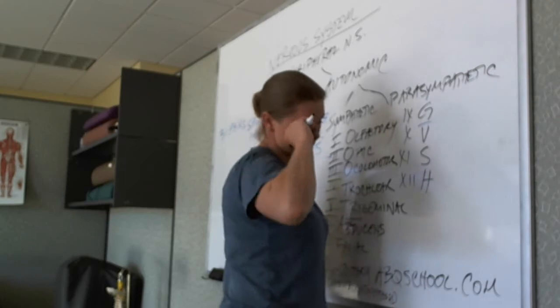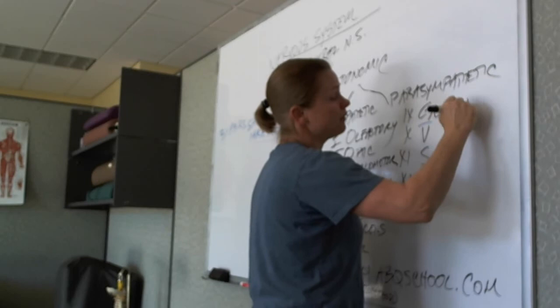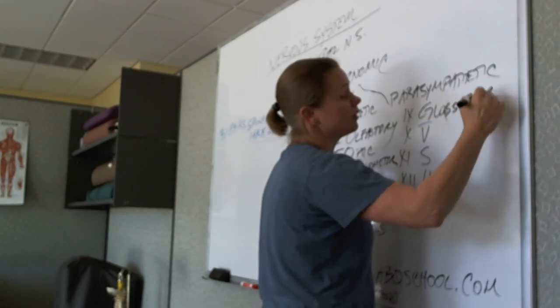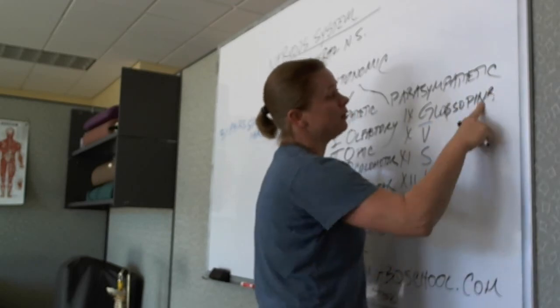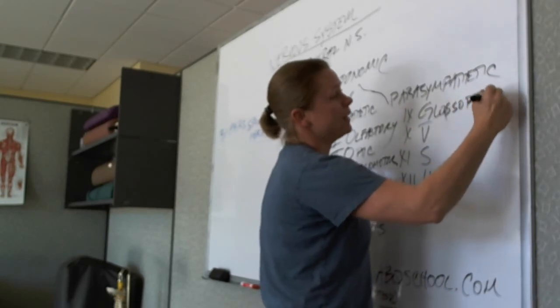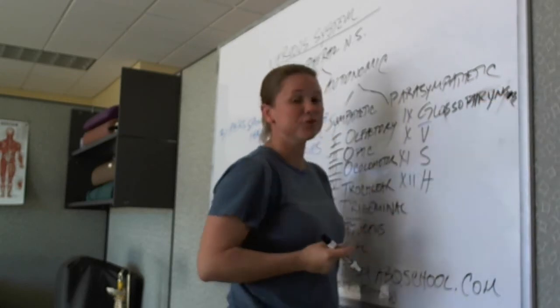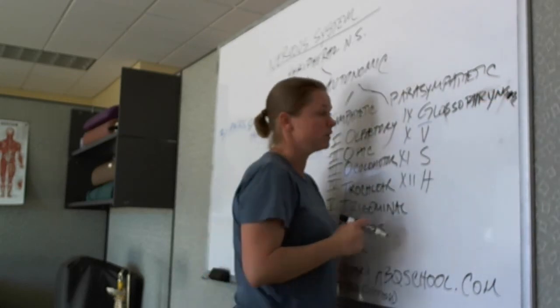Alright, let's move on top over here, nine. Glosso, which is tongue, pharyngeal. That's another hard word to spell. Pharynx. Y-N-X. Pharyngeal. Goes to your tongue and your pharynx. Interesting, huh?